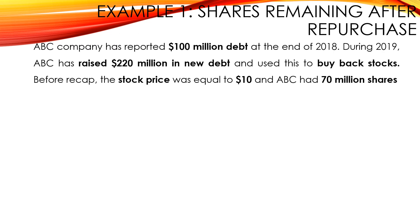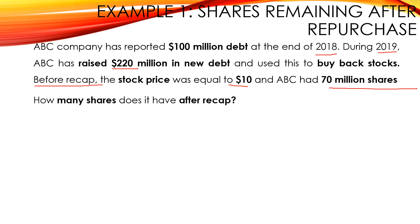ABC Company has reported 100 million dollars in debt at the end of 2018. During 2019, ABC raised 220 million dollars in new debt and used this to buy back stocks. Before recap, the stock price was equal to 10 dollars and ABC had 70 million shares outstanding. The question is: how many shares does it have after recap? So we need to calculate N post.